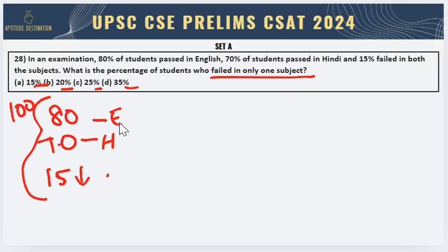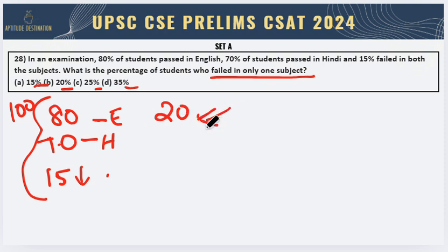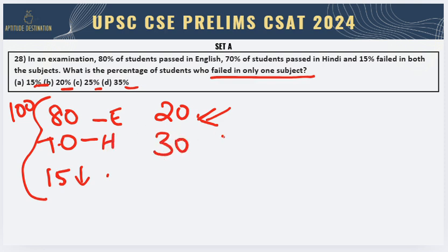Now, 80 students have passed in English, so I can say that 20 students have failed in English. This 20 might also include the students who have failed in Hindi as well. The same goes for Hindi — since 70 students have passed in Hindi, 30 students have failed in Hindi.